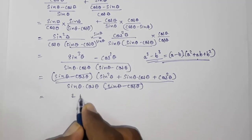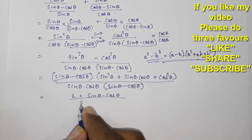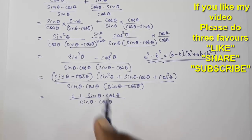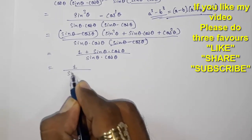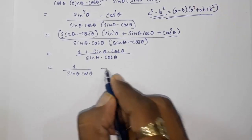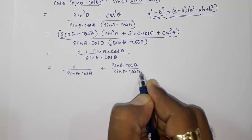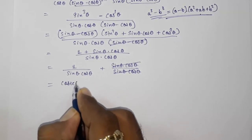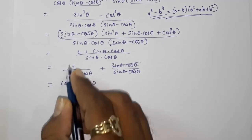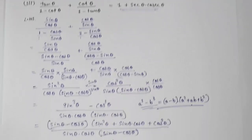Now we distribute the denominator sin θ into cos θ to both terms in the numerator: 1 upon sin θ into cos θ plus sin θ into cos θ upon sin θ into cos θ. The second term gives 1, and 1 upon sin θ into cos θ gives cosec θ into sec θ. Wait — that is 1 plus sec θ into cos θ, which is exactly our RHS. So this is how we solve this problem.